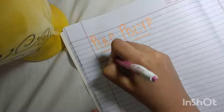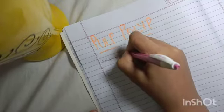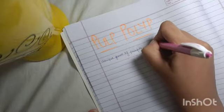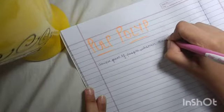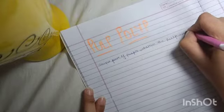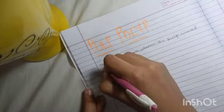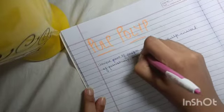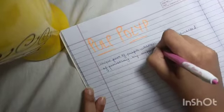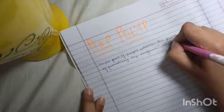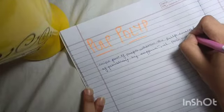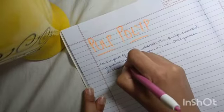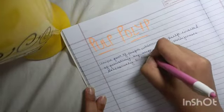Basically, it is a unique form of pulpitis wherein the pulp, instead of perishing by suppuration, it proliferates excessively and exuberantly.